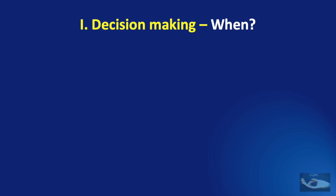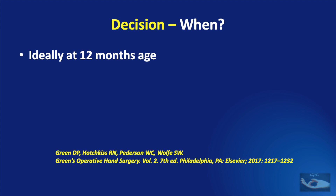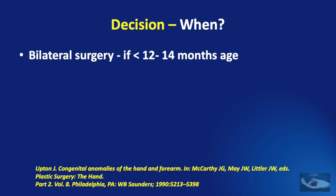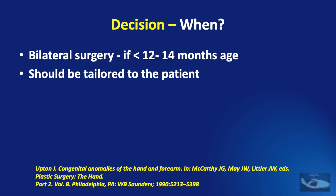Ideally the surgery needs to be done at about 12 months of age. If it is done too early, the chances of scar contracture are more. If it is done too late, the effects of asymmetric growth of the differently sized fingers will be very obvious. When the condition is bilateral, surgery for both hands can be done together if the child is less than 12 to 14 months of age, but this should be tailored to the patient's needs. When done sequentially, a minimum of 3 months gap between stages is ideal.